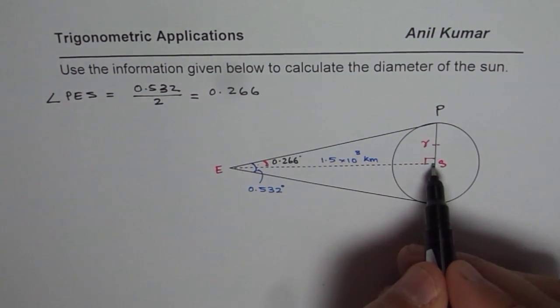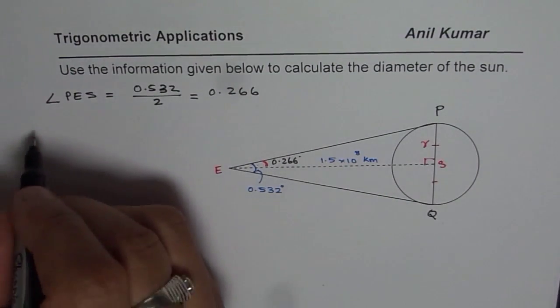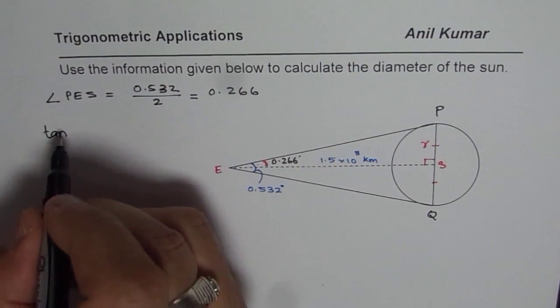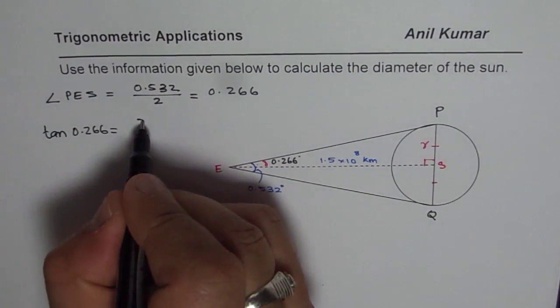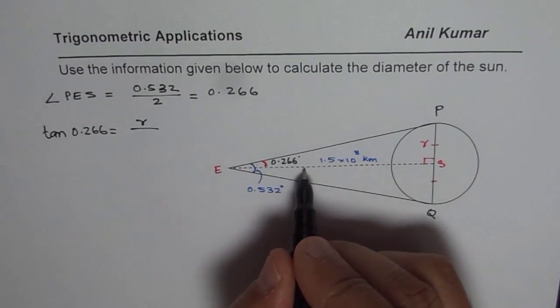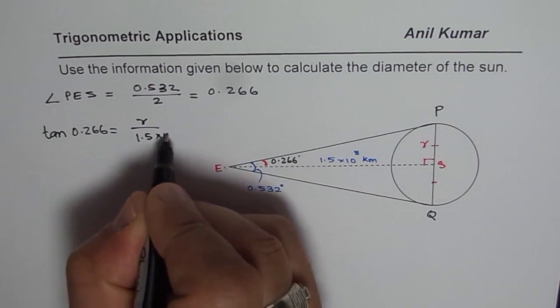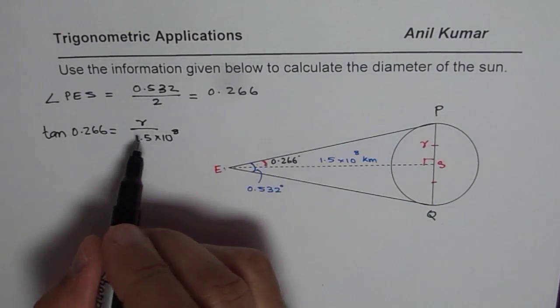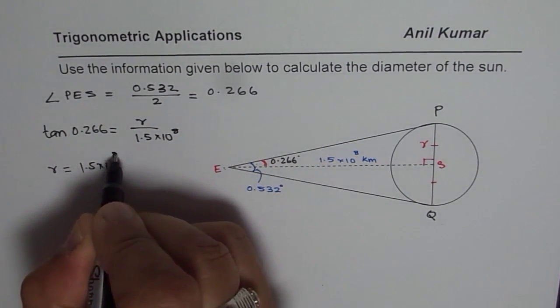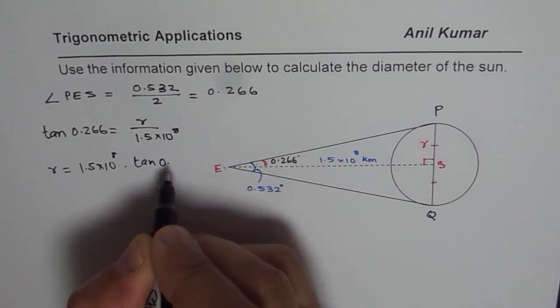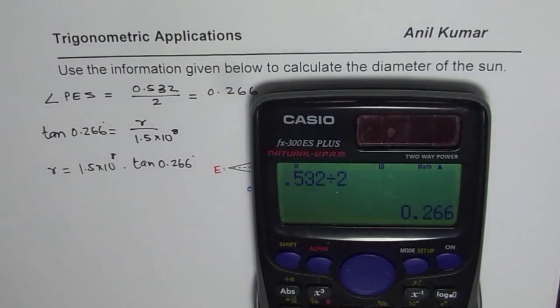you can use tan ratio to find the radius of this sun. So we can use tan. So tan of this angle, 0.266, will be equal to opposite side, which is R, over adjacent side, which is ES, which is 1.5 into 10 raised to power 8. So rearranging gives us R equals to 1.5 into 10 raised to power 8 times tan of 0.266 degrees. So let us use the calculator again to find this answer.